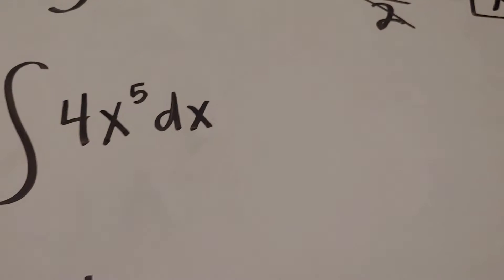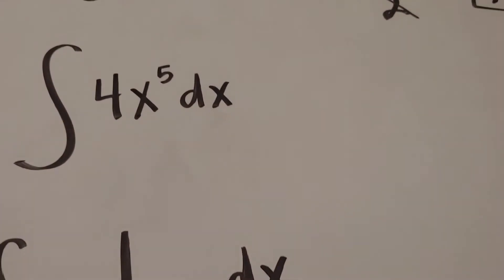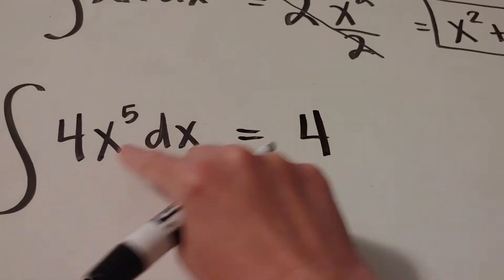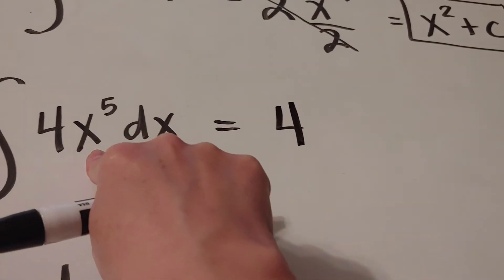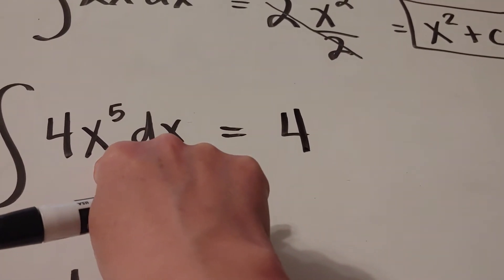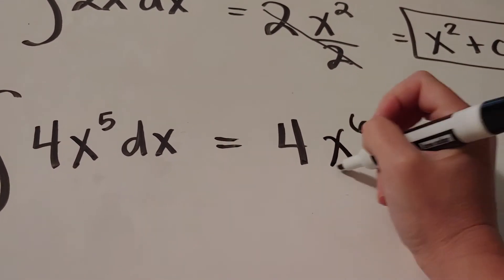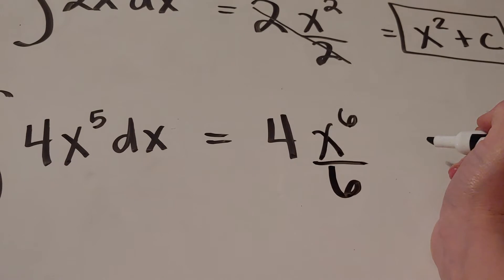Okay, let's try another one. Here I have the integral of 4x to the fifth, so that 4 is a coefficient, it's just going to chill for a minute. I'm going to do the power rule, so add a 1, and then divide. So adding a 1 makes it a 6, dividing by 6.